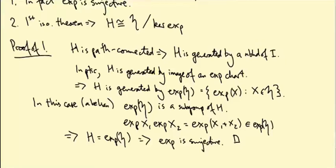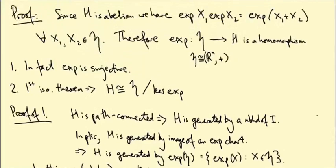So recapping: we have the exponential map as a homomorphism from the Lie algebra to H. It's surjective, so the first isomorphism theorem tells us H is isomorphic to h divided by the kernel of the exponential map. We now need to identify this kernel.